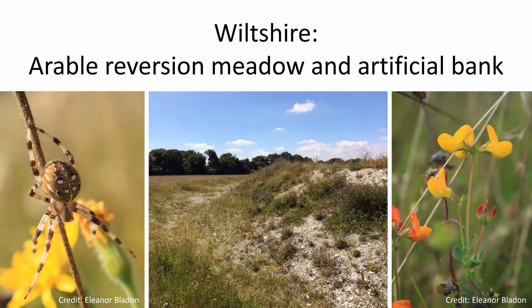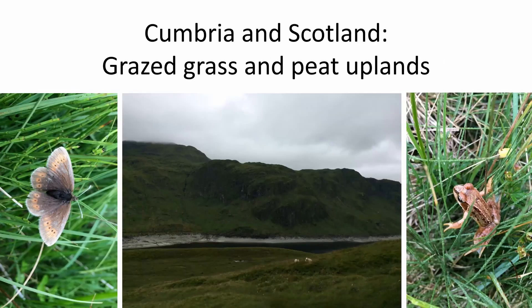In Wiltshire it's a slightly different site — chalk again, but an area which is in arable reversion, previously farmed and now being converted back into species-rich grassland, and additionally has a chalk bank specially created to try and increase the topographic diversity on the site. In Cumbria and Scotland we're working in upland habitats — grazed landscapes with peaty uplands — and this was particularly to look for one of the UK's upland specialist species, the mountain ringlet.